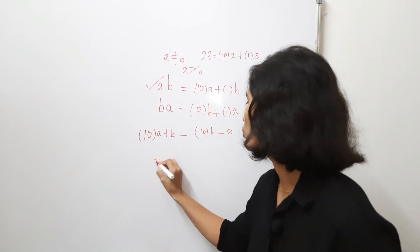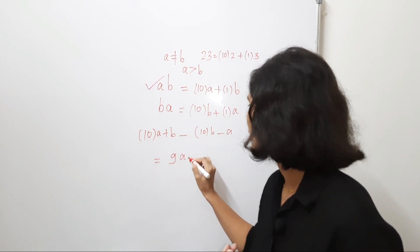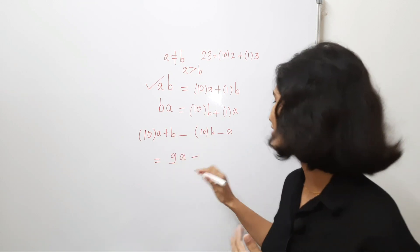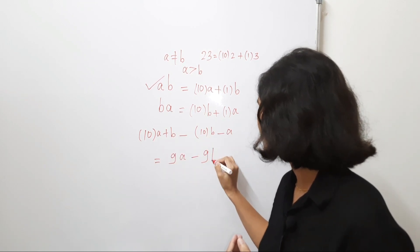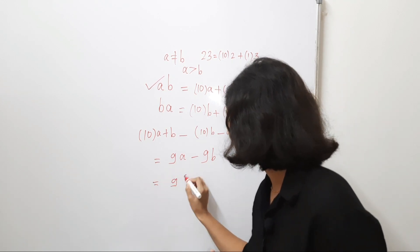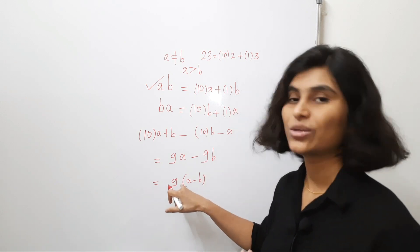This is equal to 10 times A minus A is 9 times A. And 1B minus 10B is minus 9B, right? And we can write this as 9 times A minus B. There is a multiplication sign.